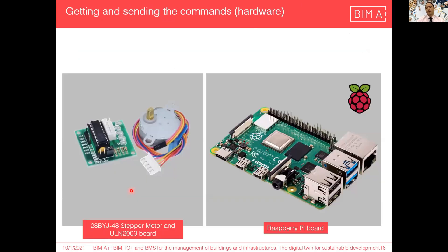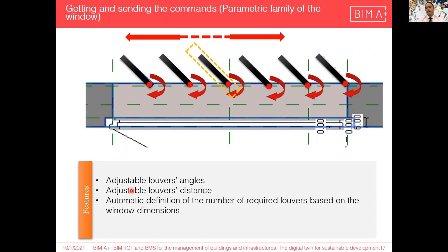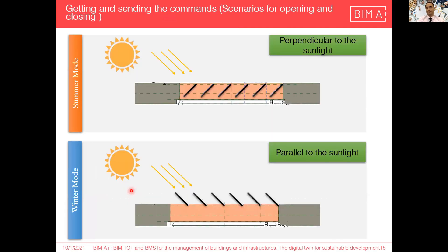We can see the stepper motor and Raspberry Pi being used here. The parametric family of the window can adjust the louver angles, louver distances, and the number of required louvers — some features intended for future research. We have two main scenarios for opening and closing the windows: summer mode and winter mode. In summer, it is desirable for the louvers to be perpendicular to the sun direction. In winter, it is reversed — louvers should be parallel to the sun direction to allow maximum sunlight entrance.